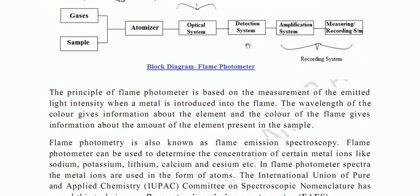The principle of flame photometry is based on the measurement of emitted light intensity when a metal is introduced into the flame. The wavelength of the color gives information about the element, and the intensity of the color of the flame gives information about the amount of the element present in the sample.